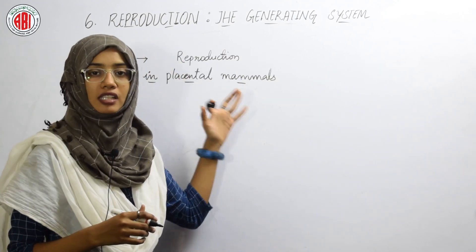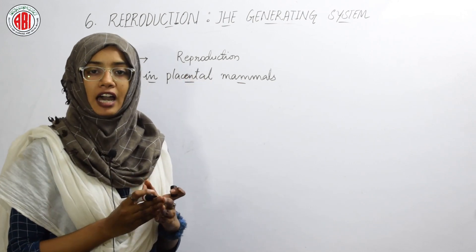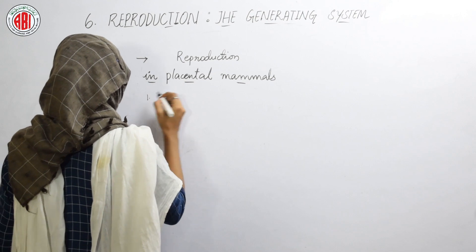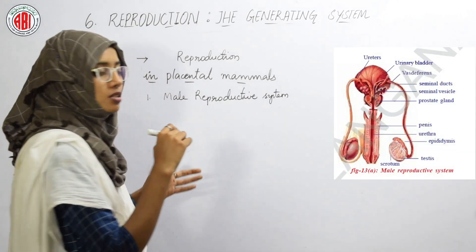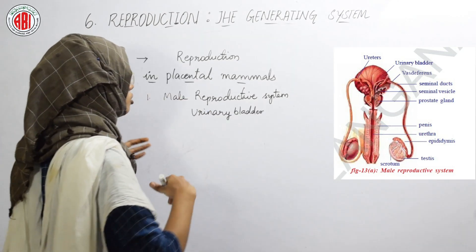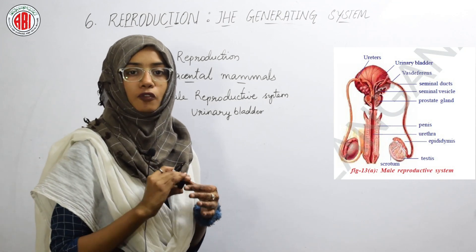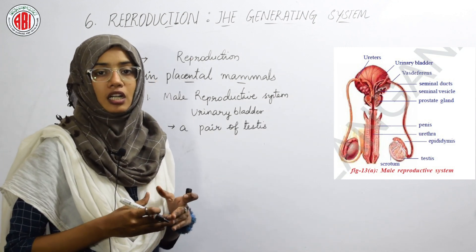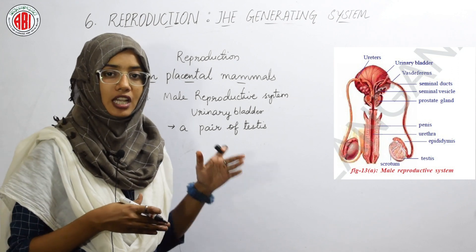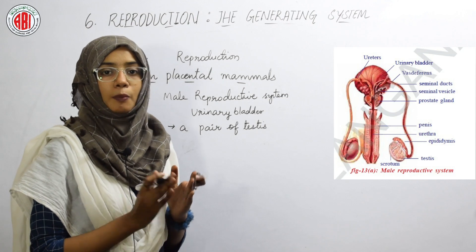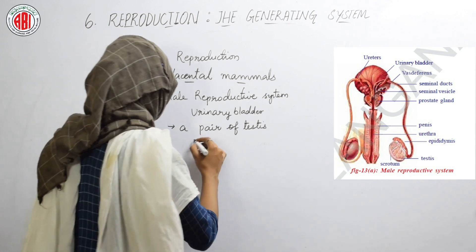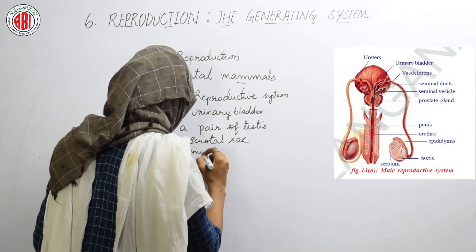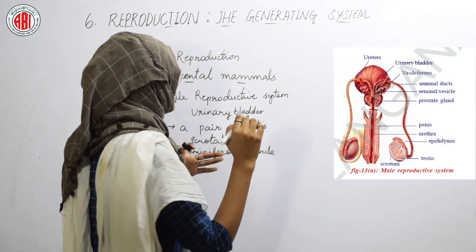Let us study about the reproduction in placental mammals, that is, reproduction in humans. Humans have a well-developed and specialized reproductive system. First, we will discuss the male reproductive system. The male reproductive system is closely associated with the urinary bladder. The major male reproductive organ is a pair of testes. Testes are very important because the production of sperm cells takes place inside the testes, and they are present outside the body in a sac-like structure called the scrotal sac. The testes also show some coiled thread-like structures called seminiferous tubules.